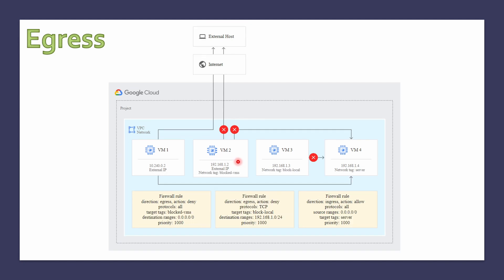In the egress example there are three firewall rules. The first has direction egress, action deny, protocols all, target 'blocked-vms', destination range 0.0.0.0/0, and priority 1000 — this is applied to VM2. The second firewall rule has direction egress, action deny, protocol TCP, with a specific blocked local destination range, and priority 1000 — this is applied to VM3.